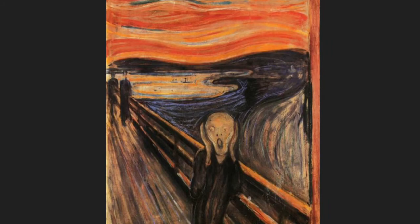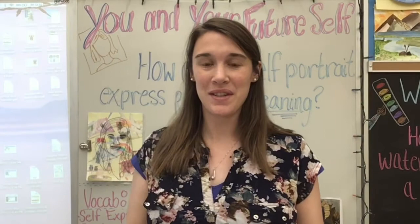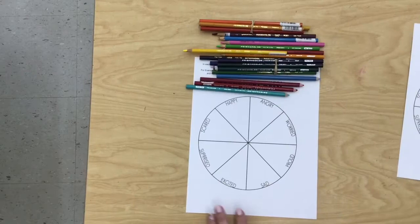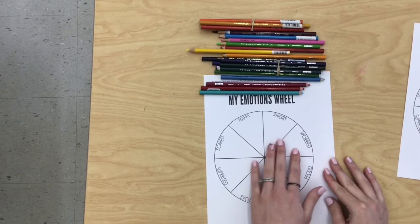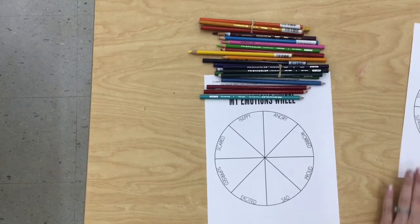Now that you've seen how artists throughout history have used color to create emotion in their artwork, let's start brainstorming ideas for how to use color in our own artwork to express emotions. Some materials you're going to need today are a worksheet titled My Emotions Wheel — this will be like our sketch before we move on to adding emotions to our still life drawing — and some colored pencils.